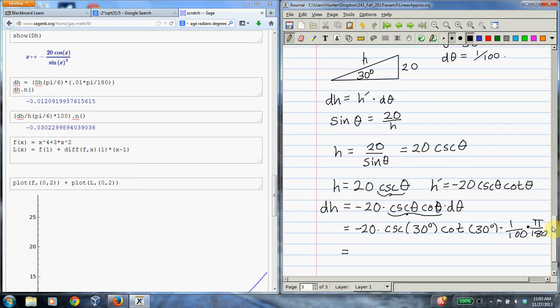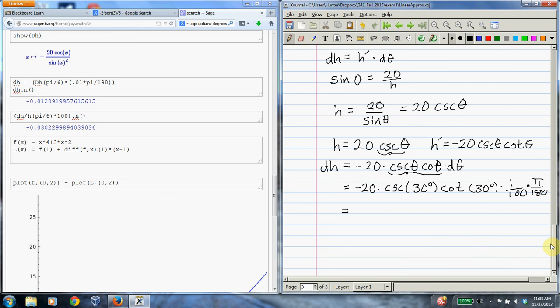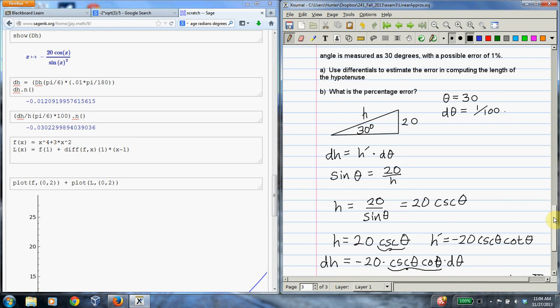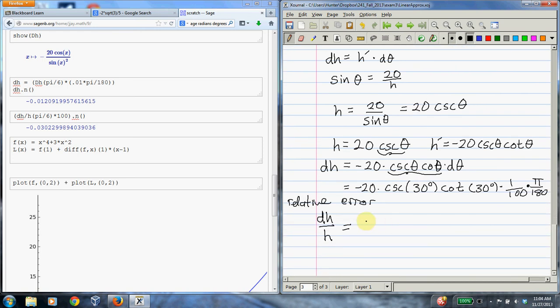So how do we get that? So first you have to find the relative error and the relative error is dh over h. So this is called the relative error. And the percentage error just comes from converting the relative error to a percentage. So the relative error, it's nice to do it symbolically at first because some things cancel out. So dh is equal to, it's right here, -20 csc(θ)cot(θ)dθ.